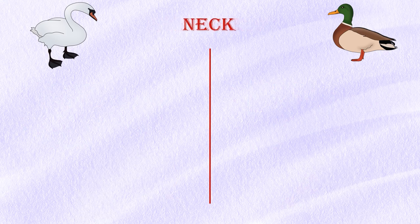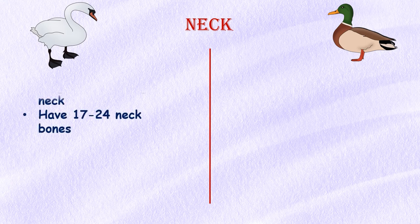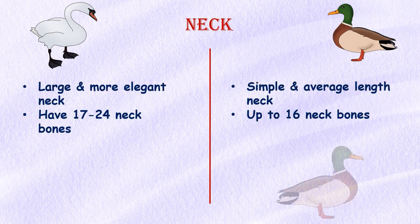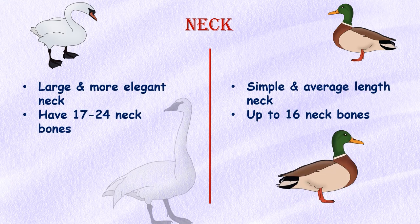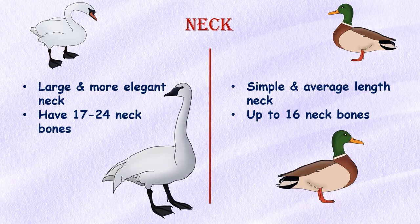Neck: Swans are well known for far longer and more elegant necks compared to ducks. Their grace and elegance is associated with their necks, while ducks have simple and average length necks. Ducks have 16 or fewer bones in their necks, while swans have 17 to 24 neck bones.